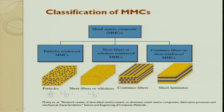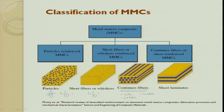The last classification is continuous fiber or sheet reinforced metal matrix composite, where a continuous fiber — glass fiber mat, carbon roving, or even cotton continuous fiber mat — is laid down to get an output. Sheet laminates are also possible where, rather than liquid metal, you start with a solid sheet, sandwich the reinforcement, and process it to get a composite. Continuous fibers find use in high-strength applications.